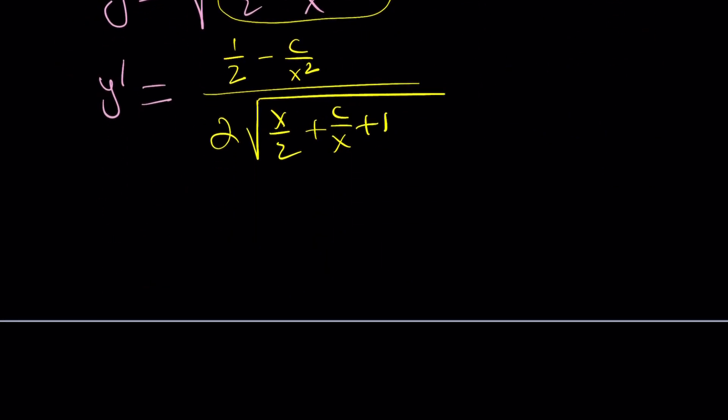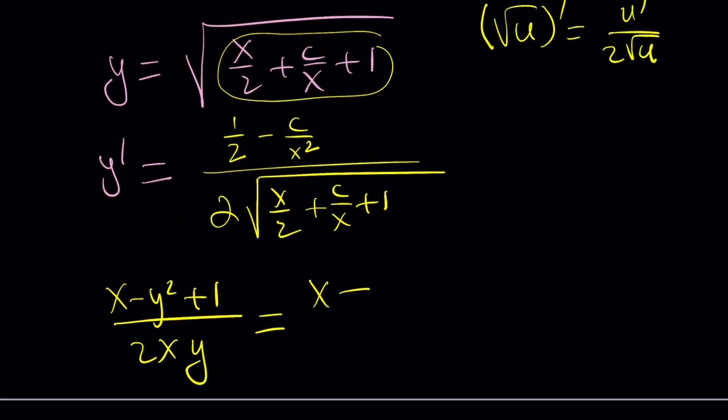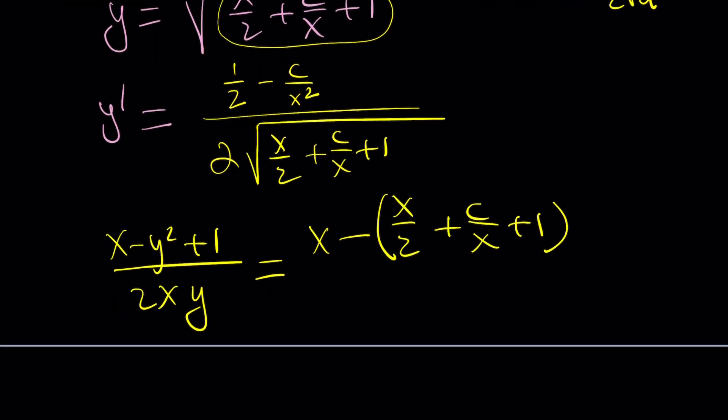Now, the main question is: is this equal to (x - y² + 1) / (2xy)? Let's find out. What is y²? This is y, so when you square it, you get something like this. You have to subtract the whole thing from x. That divided by 2x multiplied by y, which is √(x/2 + c/x + 1).